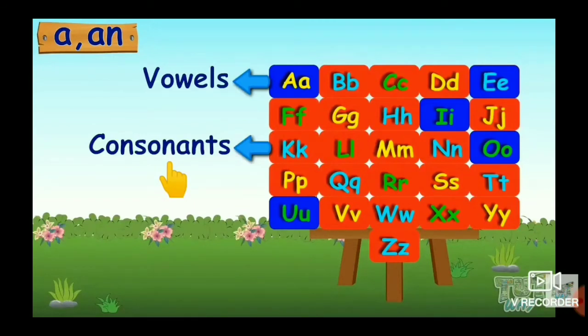Children, we have 26 letters in English. Out of them, only 5 vowels. What are they? A, E, I, O, U. Rest of them are consonants.